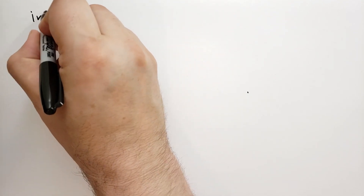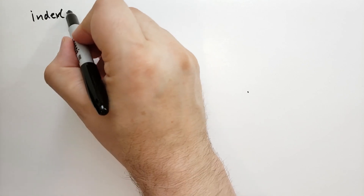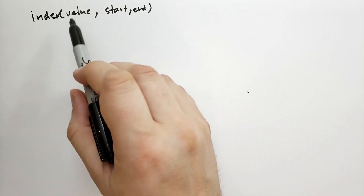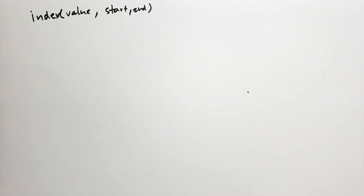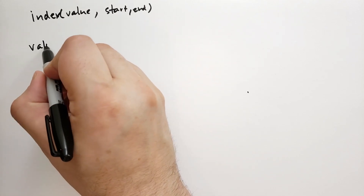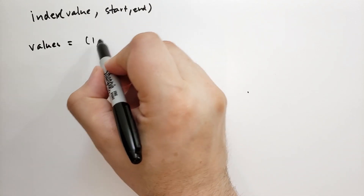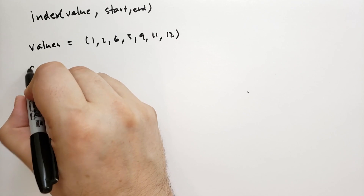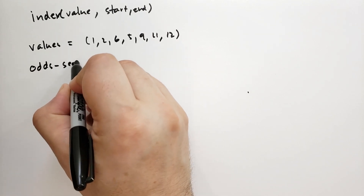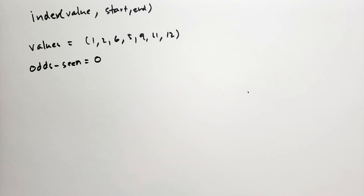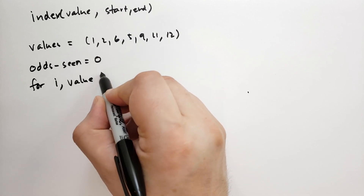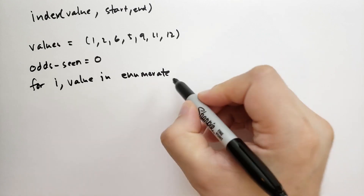Let's take an example of finding an item. We've already looked at the index method, but here we'll write our own. Say values = (1, 2, 6, 5, 9, 11, 12) and we're looking for the third odd number. We keep track of how many odds we've seen, then enumerate over the sequence so we can remember the index of each item we see.